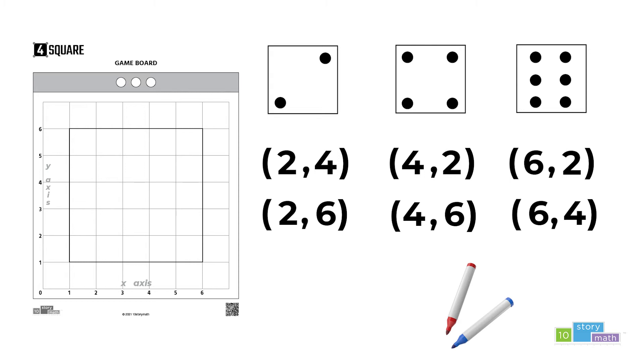Let's say they choose the point (2,4). They will use a red marker to mark the point (2,4) on the game board. Two along the X axis and up four.